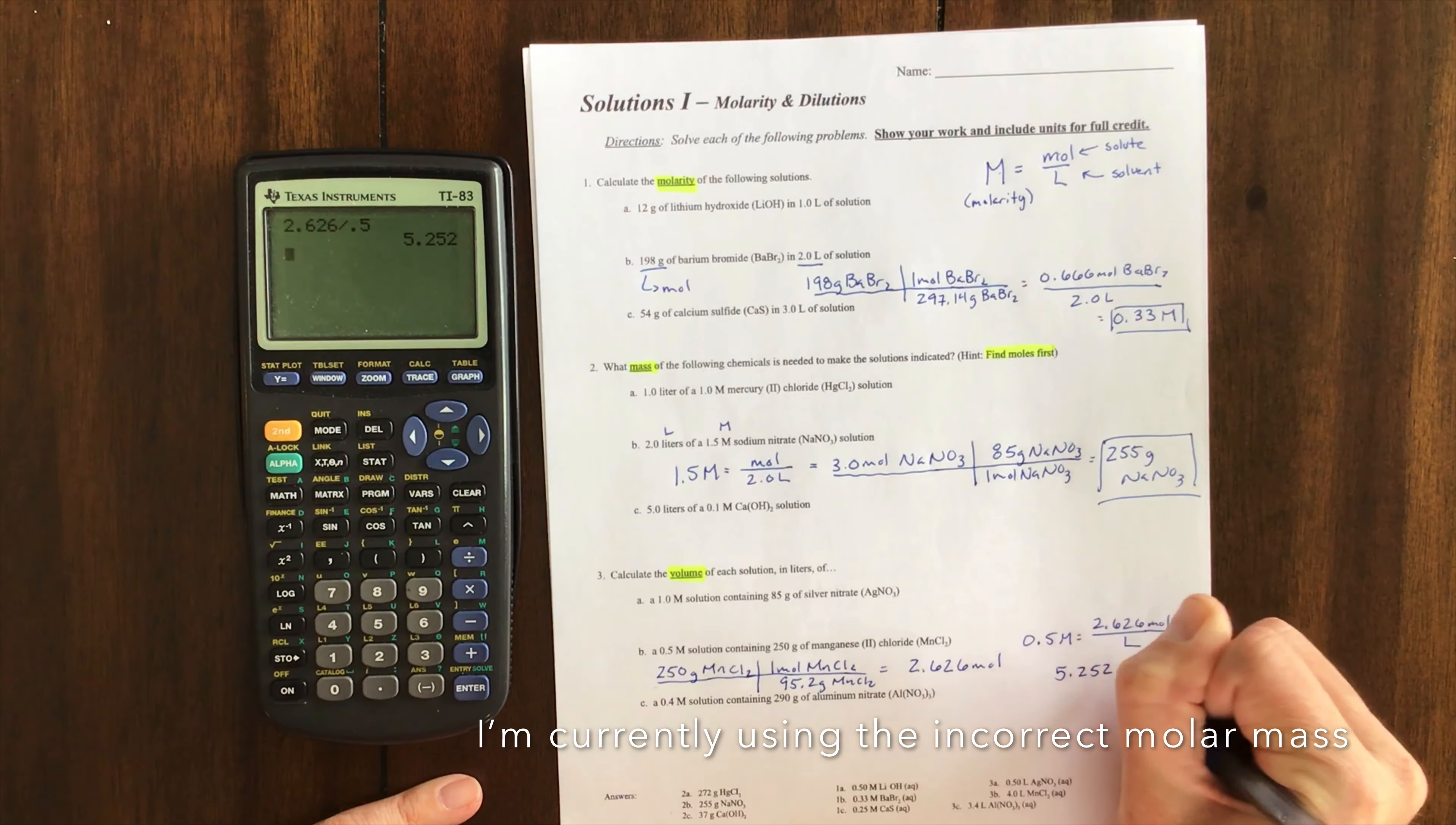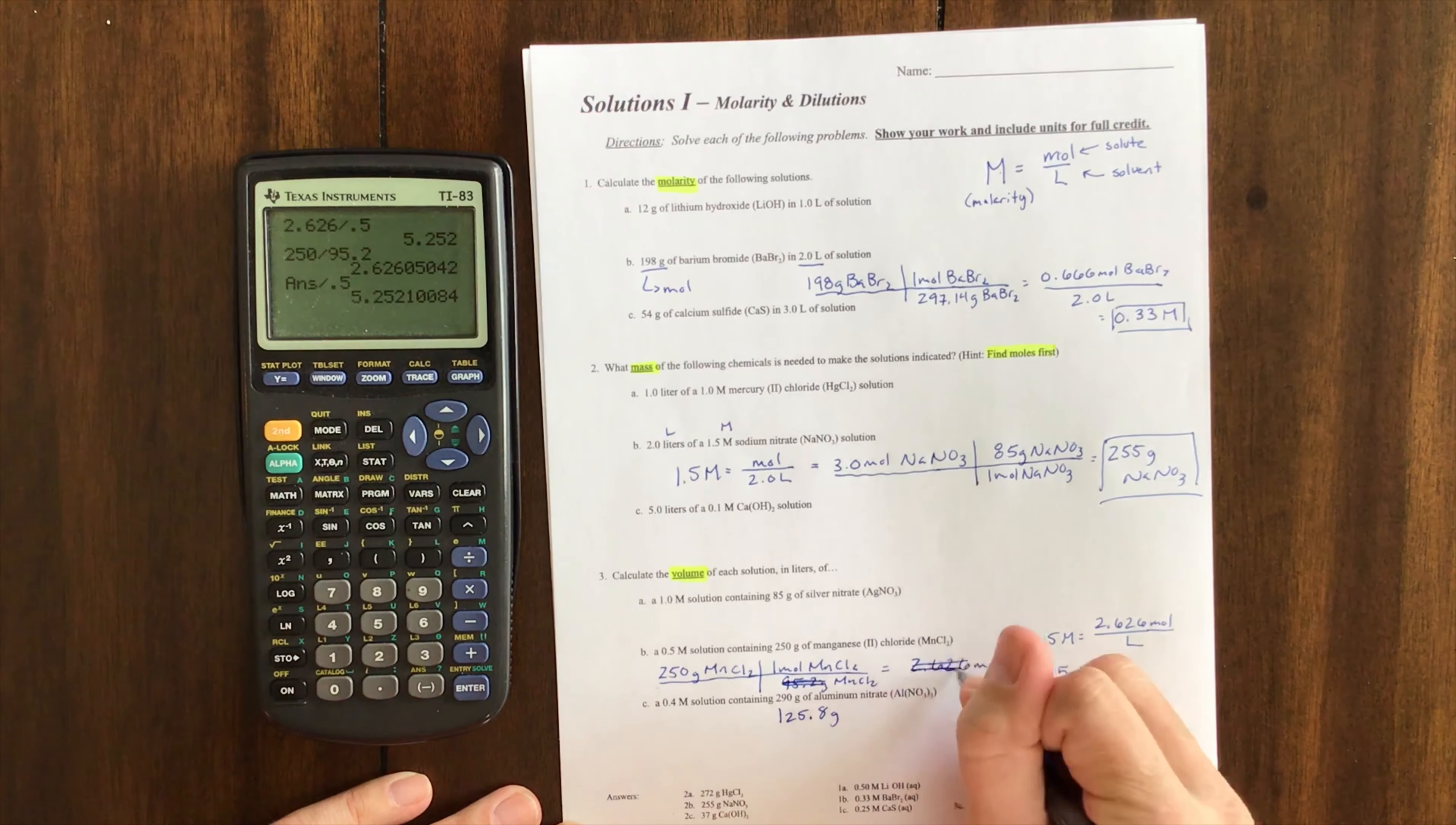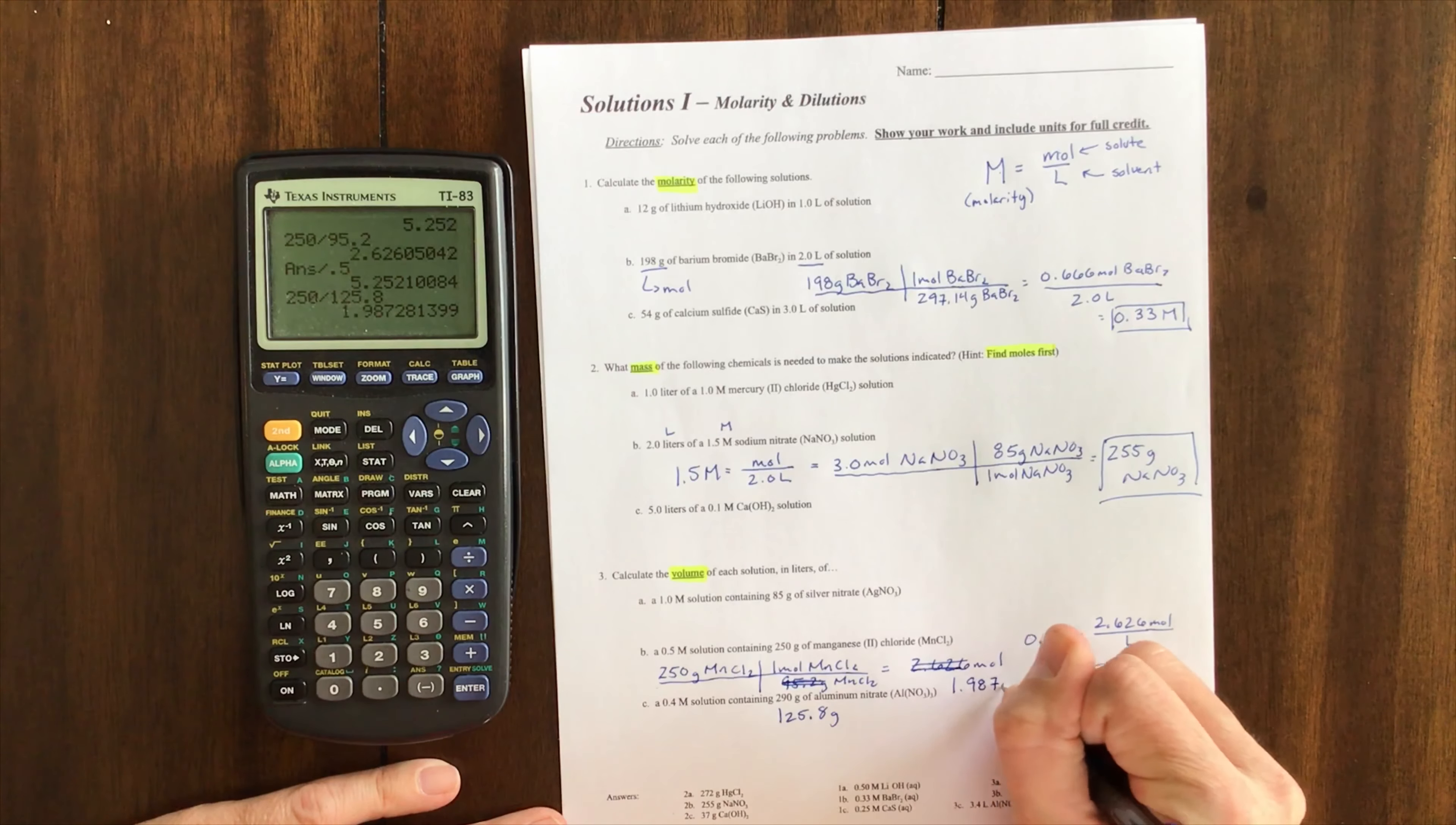I apologize, I got the mass wrong—I was wondering why that wasn't working out. So that's going to be actually 1.258 grams, which gives 1.987 moles.